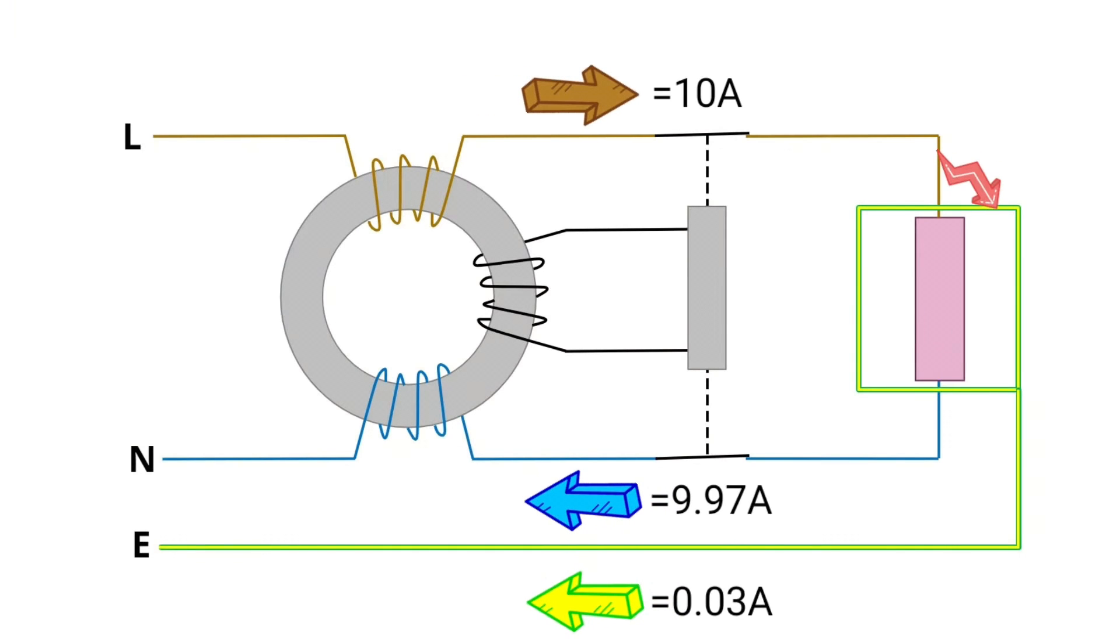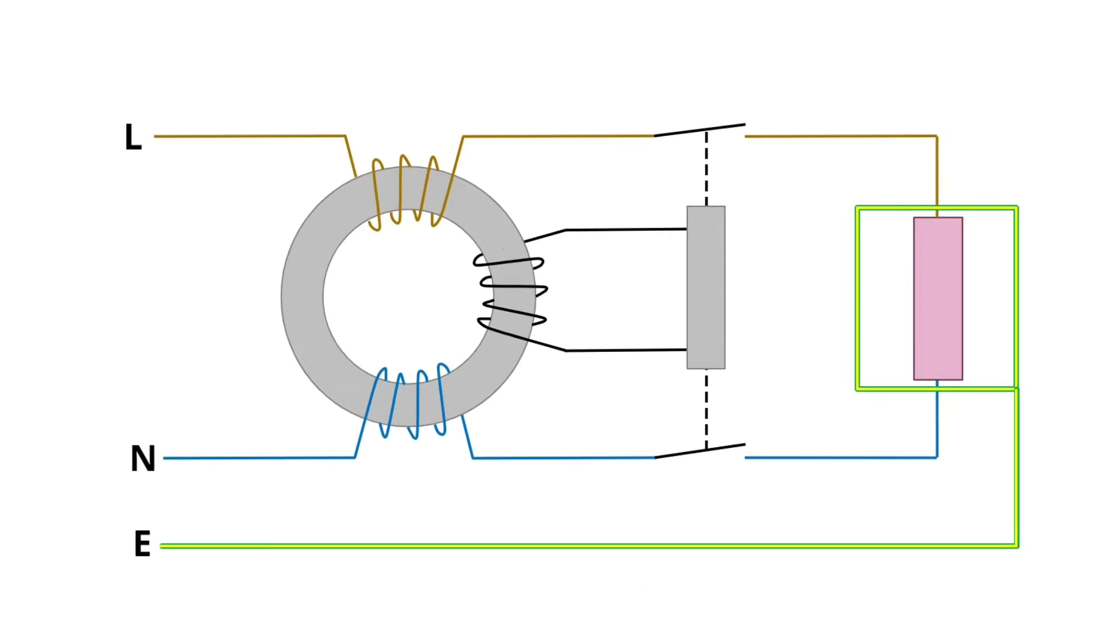Now, if an earth fault occurs and the current flowing back through the neutral is slightly smaller, this makes the neutral magnetic field slightly weaker than the one around the line conductor. So now this slightly stronger magnetic field is able to generate a small amount of current into the tripping coil using the exact same principles as the operation of a transformer. If the difference in current in the line and neutral is big enough, the current generated in the tripping coil will be enough to trigger the tripping device and disconnect the circuit.